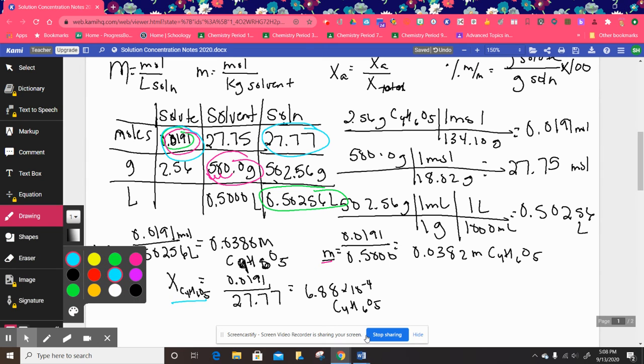Okay, now the last one, I will do that one in purple, and this is for percent by mass. So this time I actually need grams. I need grams of the solute per grams of solution.